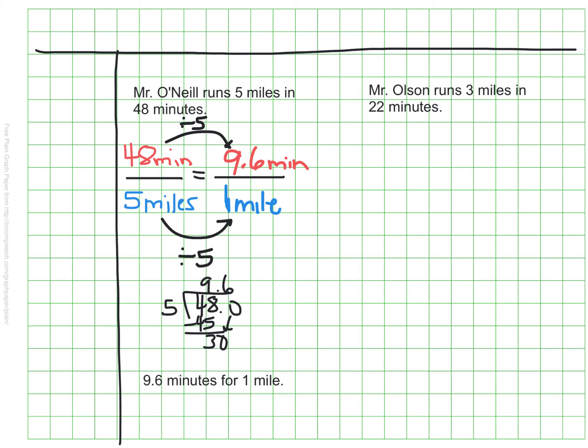We'll do the same thing for Mr. Olson, again, finding the unit rate. So again, I'm going to use equivalent ratios that are set up as part-to-part that look like fractions. I know it takes him 22 minutes to run 3 miles. I want to know how long it will take him to run just one mile. So I have the denominator of my equivalent ratio as 1 for one mile.